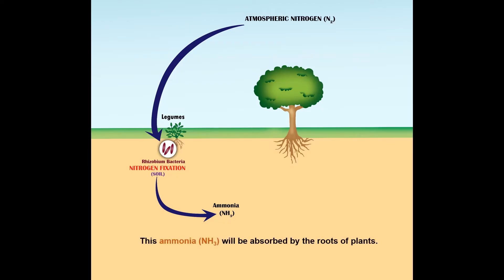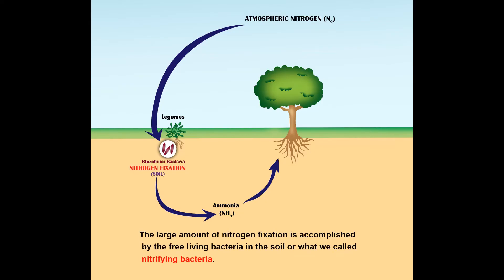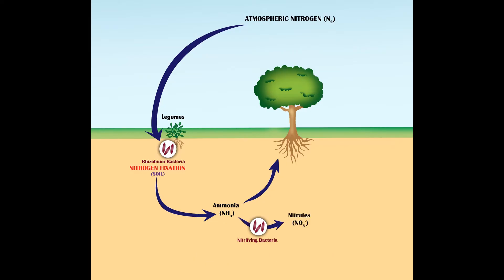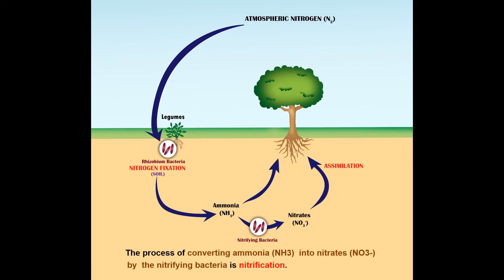This ammonia will be absorbed by the roots of plants. Nitrification: The large amount of nitrogen fixation is accomplished by the free-living bacteria in the soil, or what we call nitrifying bacteria. They can convert ammonia into nitrates that can be absorbed by the roots of plants. This process of converting ammonia into nitrates by the nitrifying bacteria is nitrification.